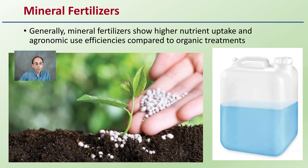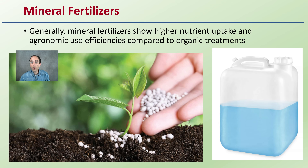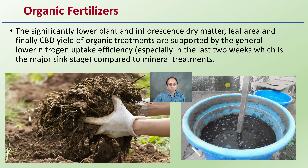Mineral fertilization generally shows higher nutrient uptake and agronomic use efficiencies compared to organic treatments, mainly because it's immediately available and doesn't need to be broken down. Organic fertilizers resulted in significantly lower plant and inflorescence dry matter, leaf area, and CBD yield — supported by the general lower nitrogen uptake efficiency, especially in the last two weeks, which is a major sink stage when nutrients are going to the flower.